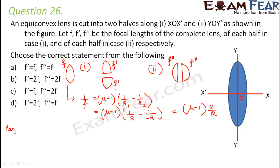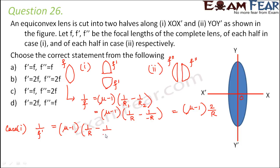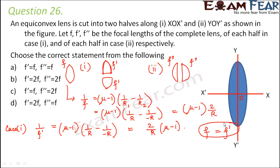Now for case 1, when the lens is cut along the X-axis, 1/F' = (μ−1)(1/R − 1/(−R)), because there is no change in the radius of curvature — on both sides you still have convex surfaces. So the value again comes out to be (μ−1)(2/R). Therefore F = F'. This means options B and D are definitely not correct.